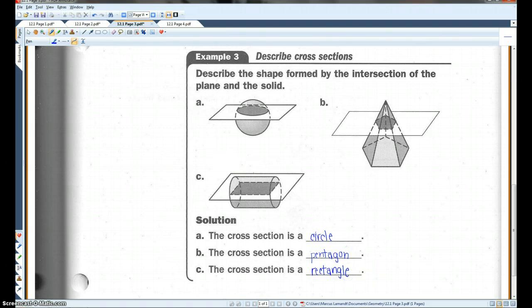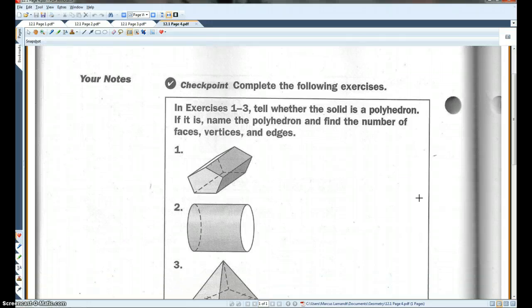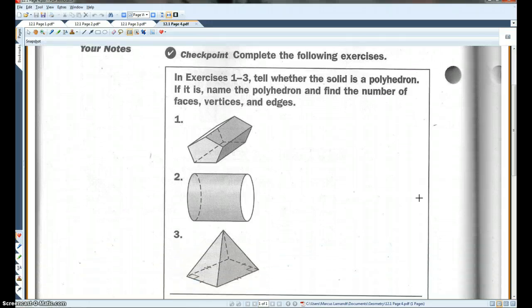On page four, checkpoint. Complete the following exercises. In exercises one through three, tell whether the solid is a polyhedron. If it is, name the polyhedron and find the number of faces, vertices, and edges. I'd like you guys to try to do these on your own. So go ahead and pause the video here. See if you can do these on your own, and then hit play for the answers.